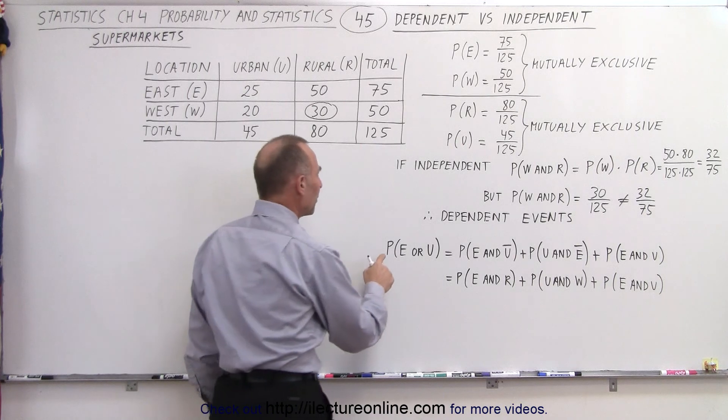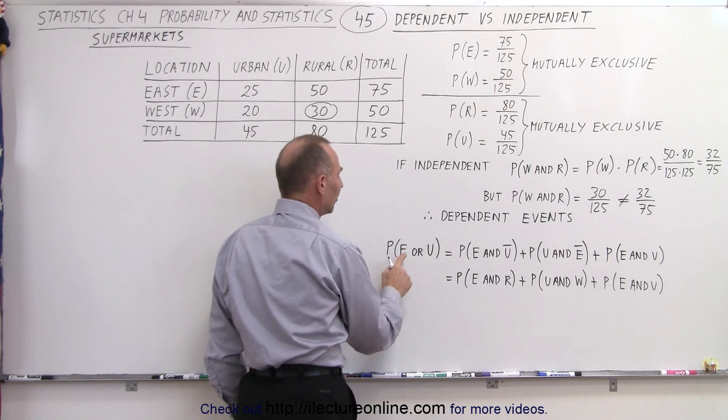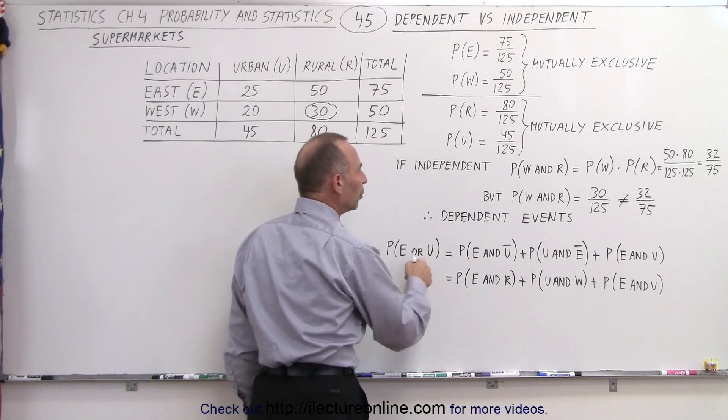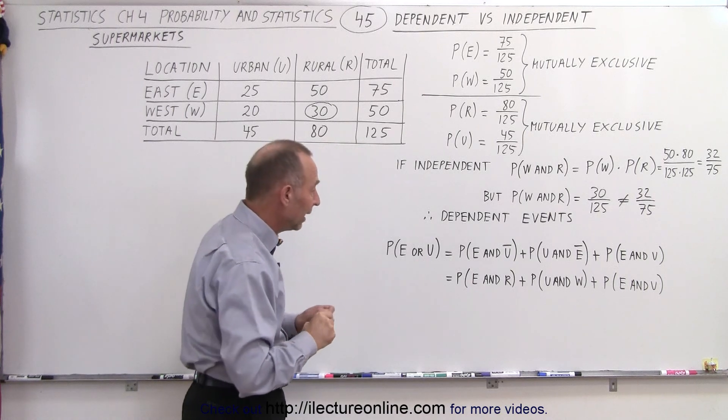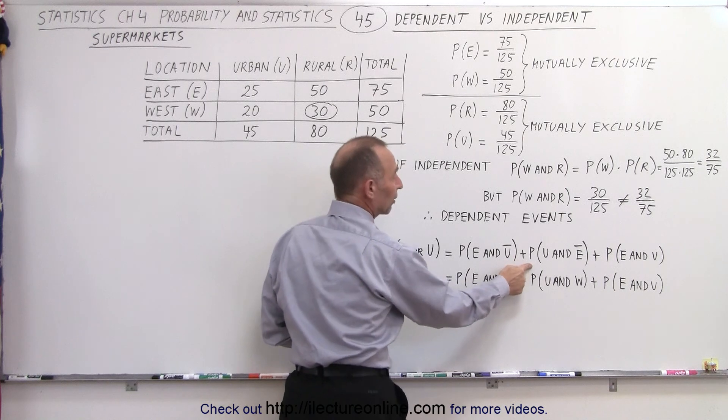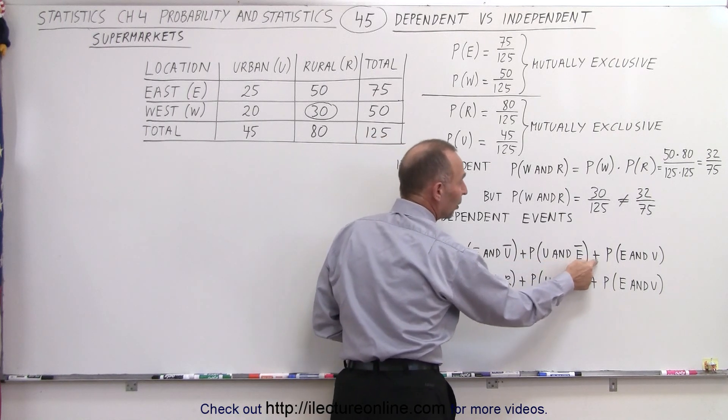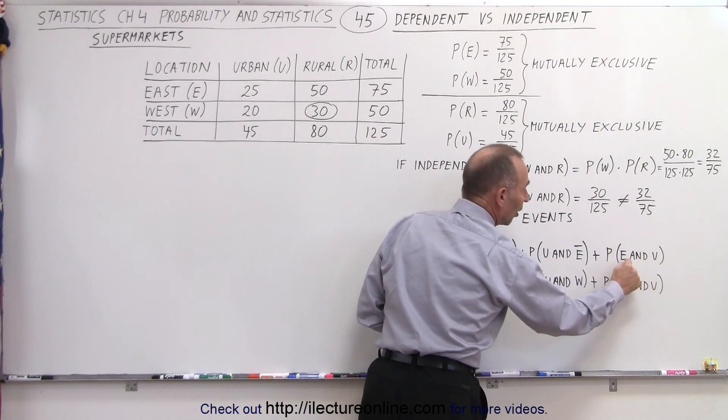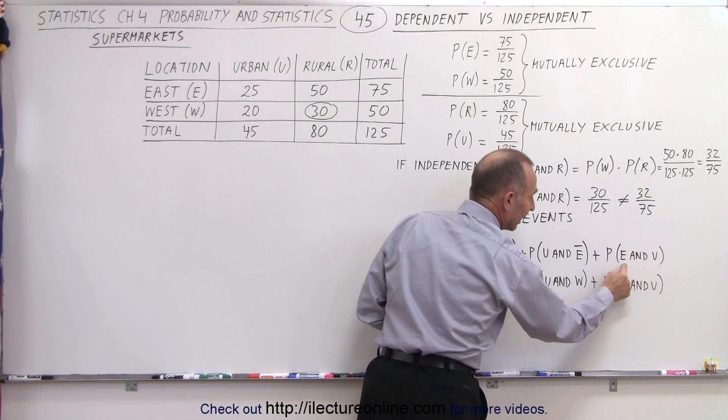What if we want to find the probability that the supermarket is in the east or urban? Well the way to do that is to add the probability that it's east and not urban plus the probability that's urban and not east plus the probability of the intersection of urban and east together.